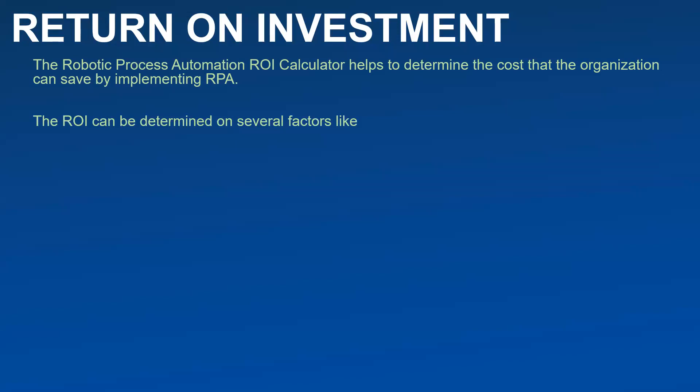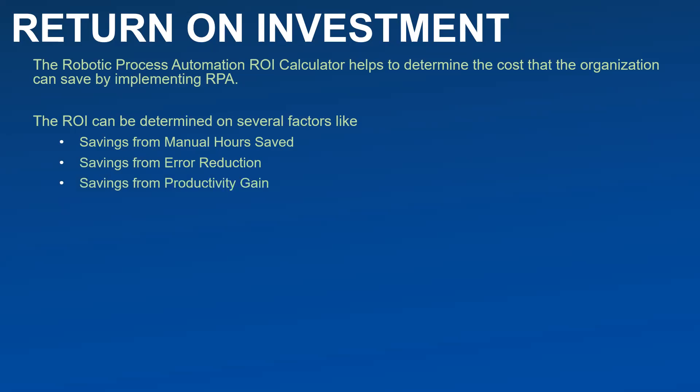This ROI is determined on several factors. When you are investing in automation, you will be saving manual hours, so you can redeploy that person for something more useful. Savings can also be determined based on error reduction — with manual intervention comes many manual errors, which can certainly be reduced when we go ahead with RPA implementation.